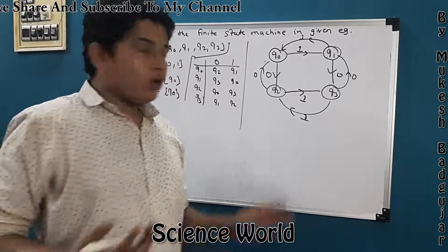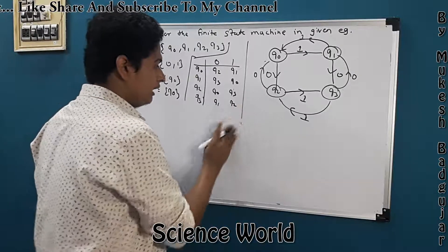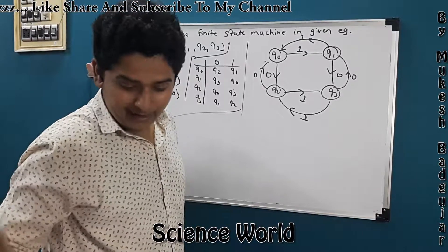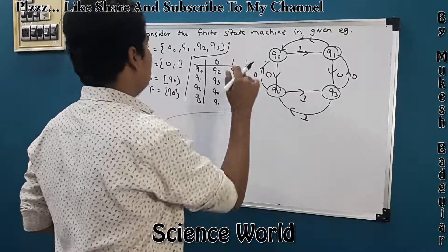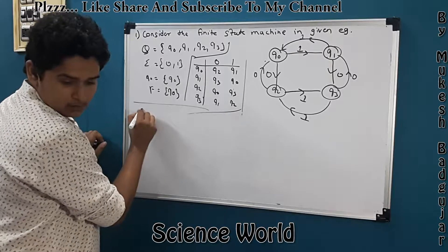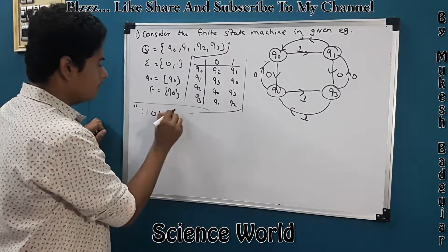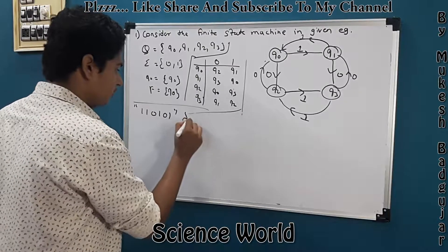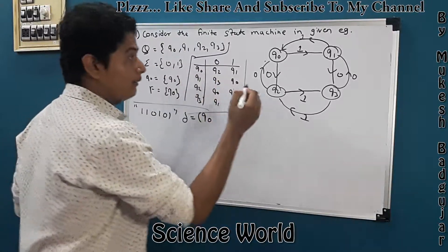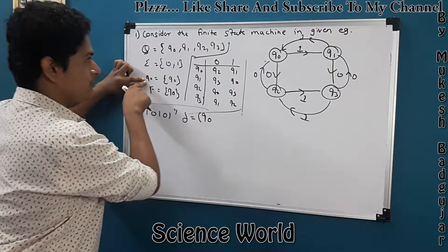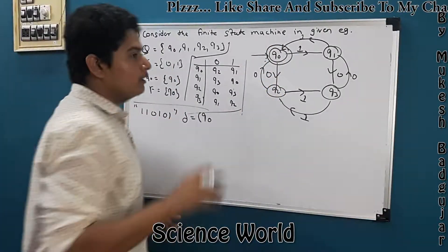Now we solve our example using the delta function. I forgot to write the string — the string is 110101. We have to evaluate this string using our delta transitions. Our initial state is Q0 and our final state is also Q0, so we mark it with a double circle.